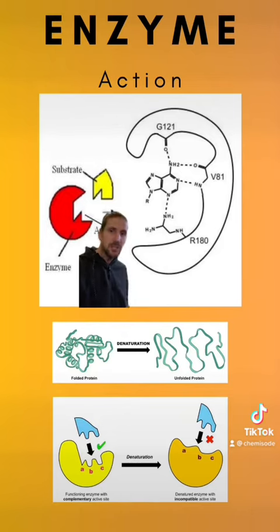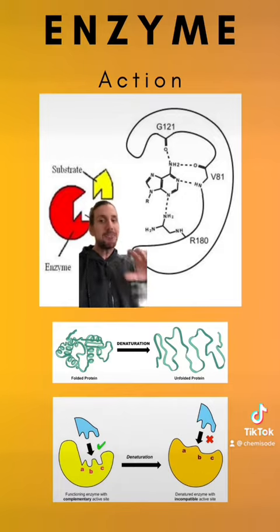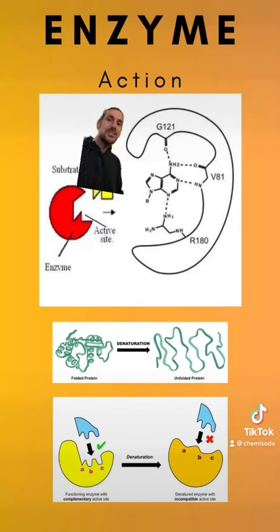Enzymes are biological catalysts and their main job is to speed up biological processes to make them happen in a reasonable amount of time. The way they do this is to do with their shape. Enzymes have a very unique shape and part of that is called an active site. The active site is what binds to the substrate that the enzyme is actually trying to make react.